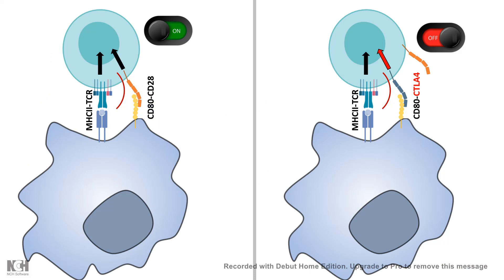Instead, CTLA-4 acts as an inhibitory signal. As shown, CD80 and CTLA-4 can interact and give an inhibitory signal. Not only does the CD80 and CTLA-4 interaction give a negative signal, but it also prevents CD28 from interacting with CD80 — it sequesters the ligands for the CD28 receptor. And that is how it prevents T-cell activation.